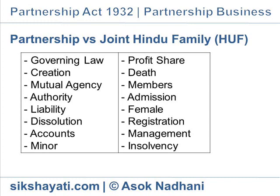There is no mutual agency between the members — that is, coparceners — of the Joint Hindu Family. Authority: Every partner has an implied authority to carry on the business. Acts of a partner in the ordinary course of the business of the firm bind the firm.